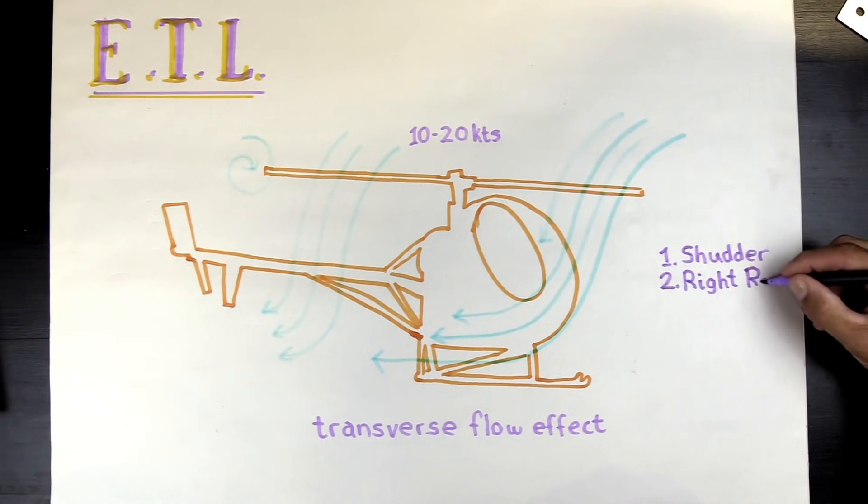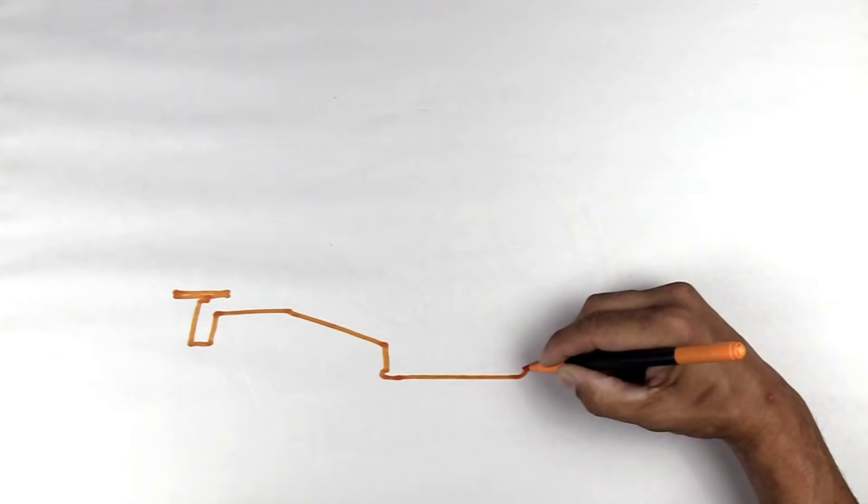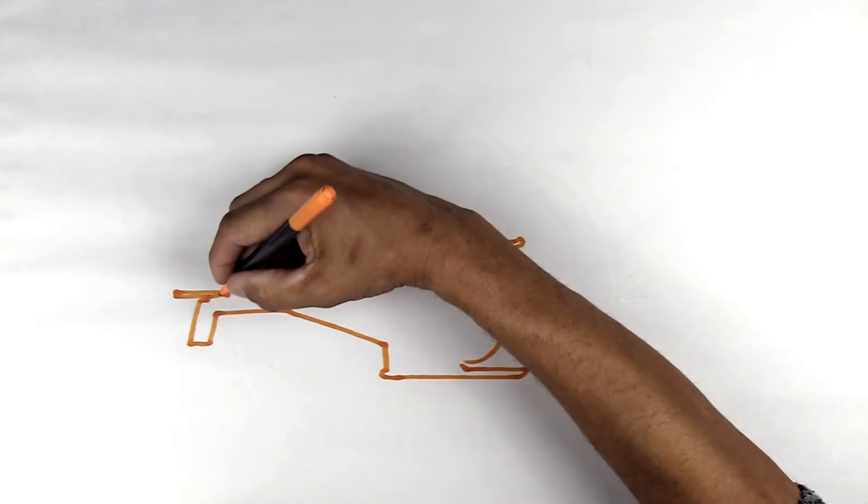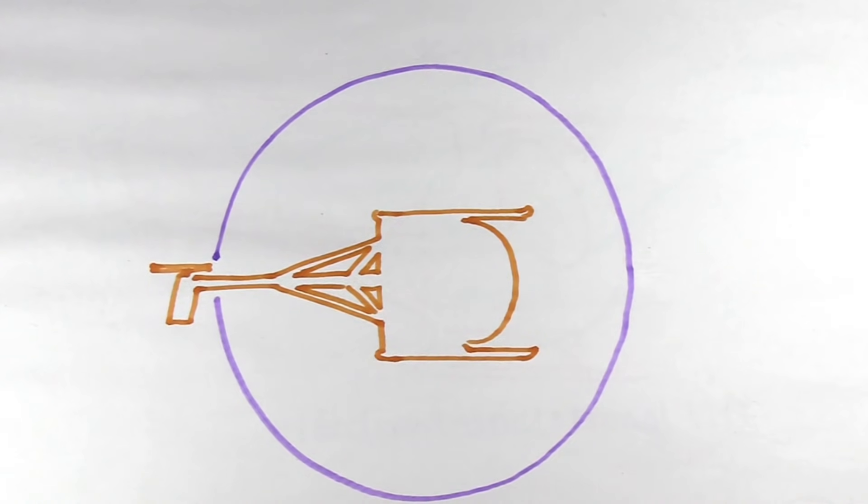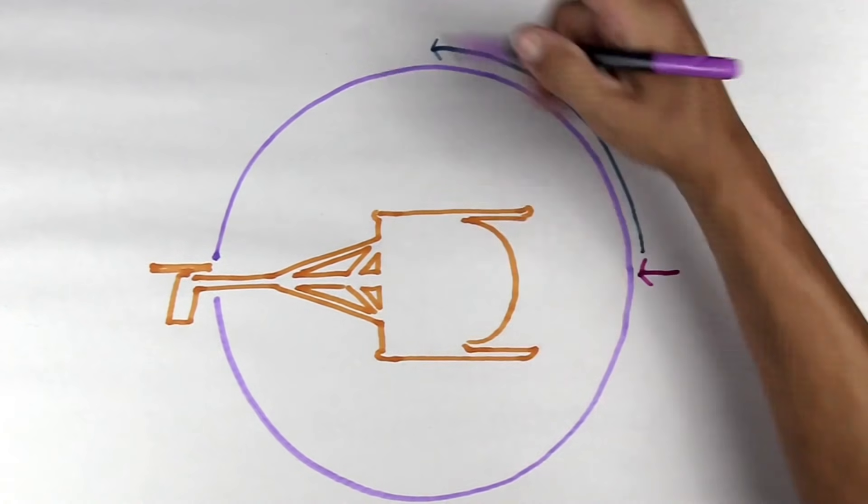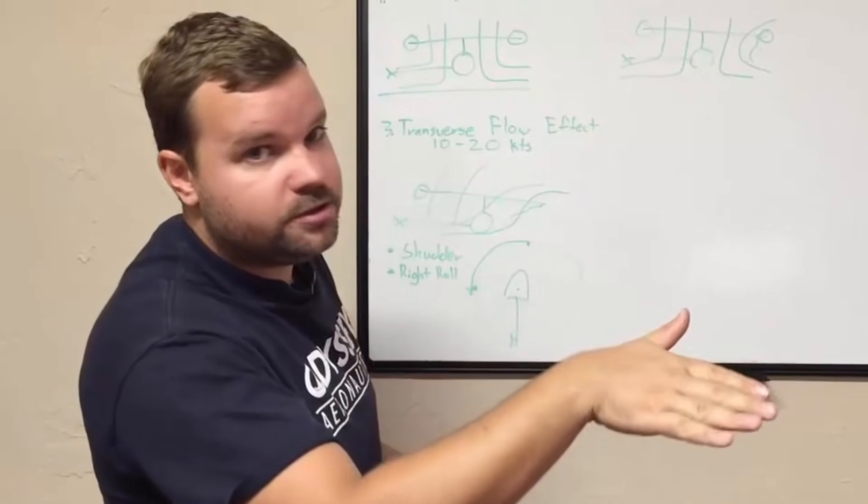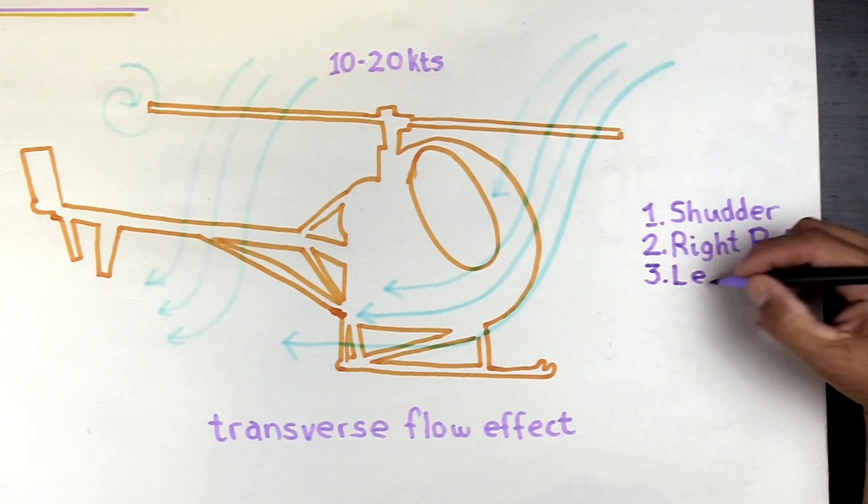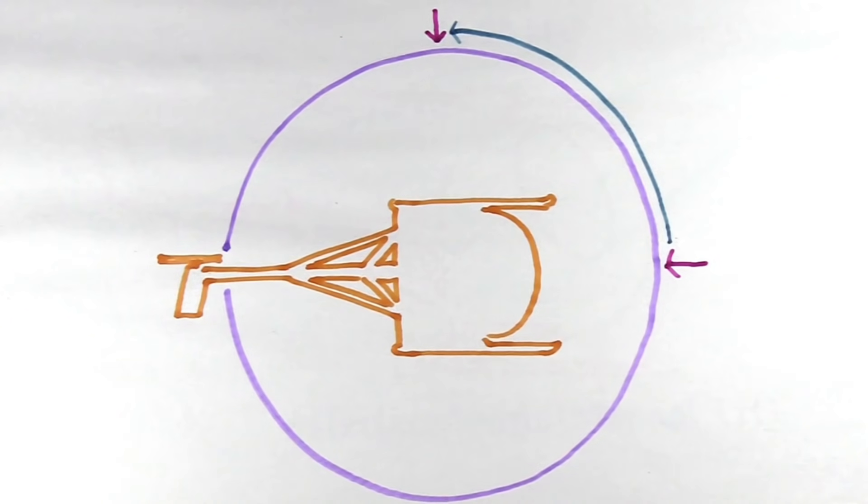The second thing is a right roll. We talked about gyroscopic precession in another video so you may want to review that. But if I look top down at the helicopter, here's the body of the helicopter, the tail, I have the blade. You're getting more lift at the front of the blade, but because of gyroscopic precession that has a maximum effect 90 degrees later over here. So you have that increase in lift affecting you on the left side, which will cause the helicopter to roll to the right a little bit.